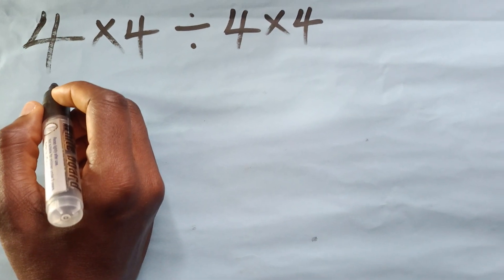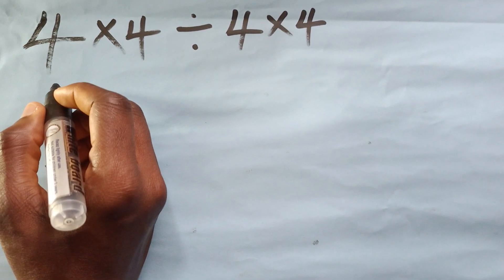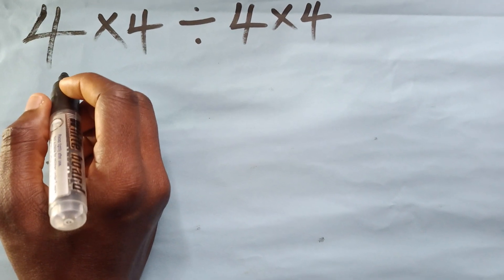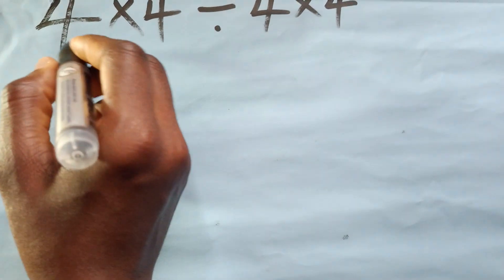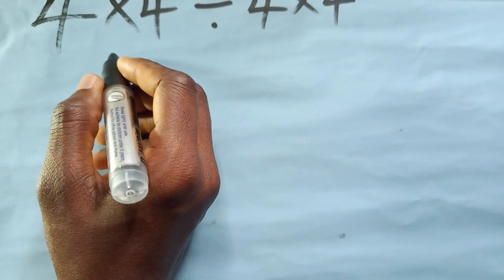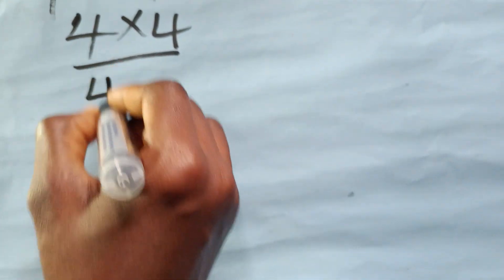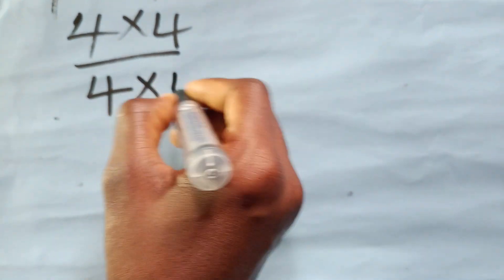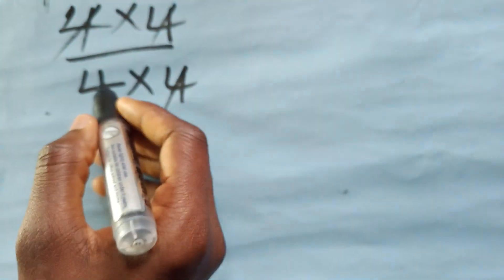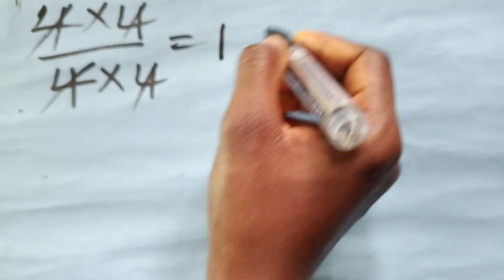Four times four divided by four times four — the answer is not one. Some solve it by canceling: four times four divided by four times four, this one cancels this one, this one cancels this one, giving an answer of one. But this is not correct.